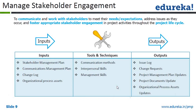After planning, you actually manage stakeholder engagement. The tools and techniques are communication methods, interpersonal skills, and management skills. Outputs include the issue log, change requests, project management plan updates, document updates, and OPA updates. The objective is to communicate and work with stakeholders to meet their needs and expectations, address issues as they occur, and foster appropriate stakeholder engagement throughout the project lifecycle.